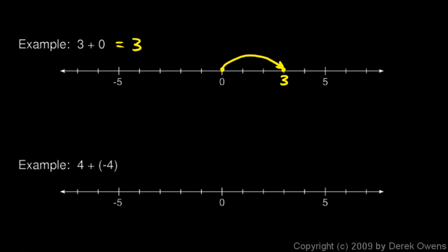And then four plus negative four: adding two opposite numbers results in one movement and then an exact opposite movement. The four corresponds to four to the right, which puts us right there. Then the negative four corresponds to four to the left, putting us right back where we started at zero. So four plus negative four is zero. These little pictures lead us to some more ideas about real numbers, which we can formally state as properties of real numbers. Being able to draw mental images like the ones you see here is going to be really helpful in the very near future.